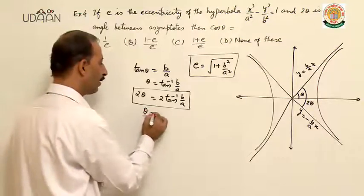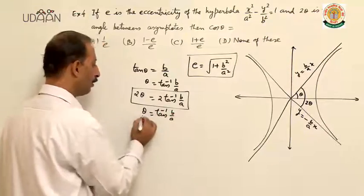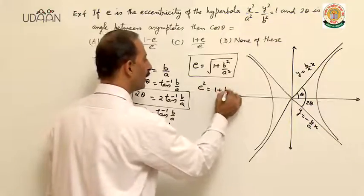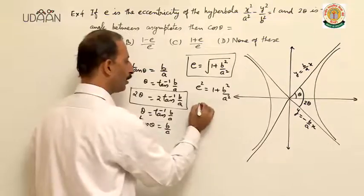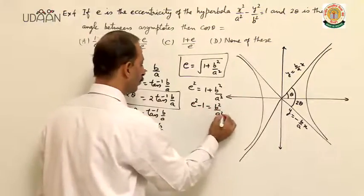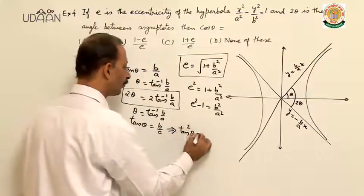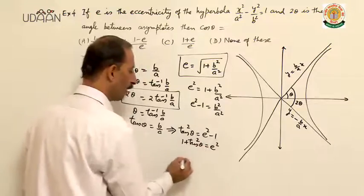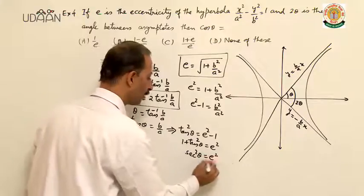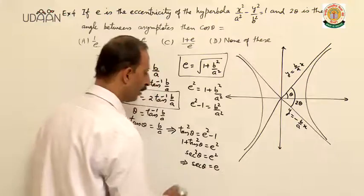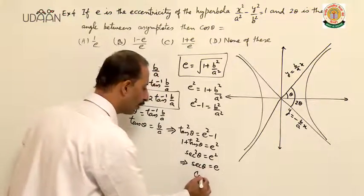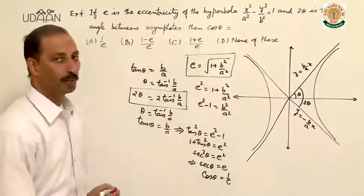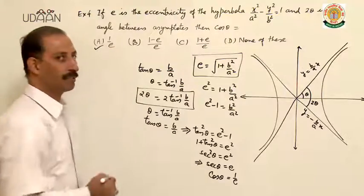From tan theta equal to b upon a, squaring: e square equals 1 plus b square upon a square, so e square minus 1 equals tan square theta. Therefore 1 plus tan square theta equals e square, so sec square theta equals e square, meaning sec theta equals e. Taking reciprocal, cos theta equals 1 upon e. So option A is the correct option.